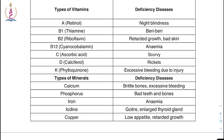Brief overview of vitamins and deficiency diseases: Vitamin A is retinol — deficiency causes night blindness and some reproductive issues. Sources include carrots, spinach, and milk. Vitamin B1 is thiamine; B2 is riboflavin; B12 is cyanocobalamin. These are important to remember.